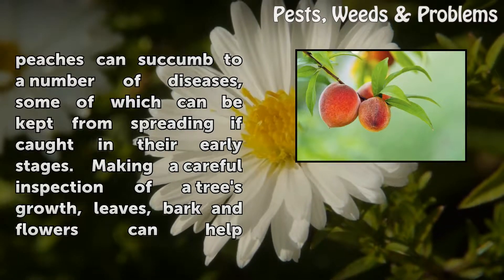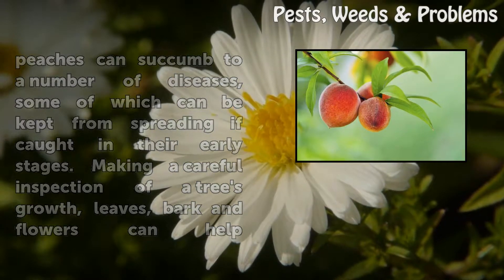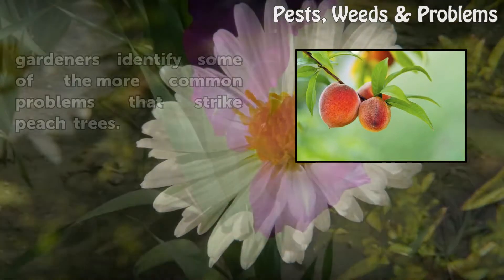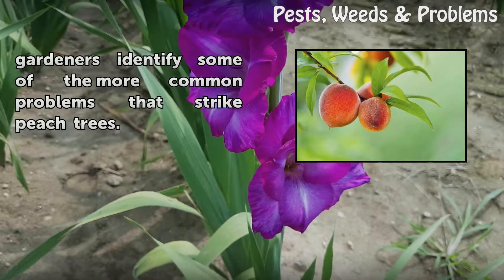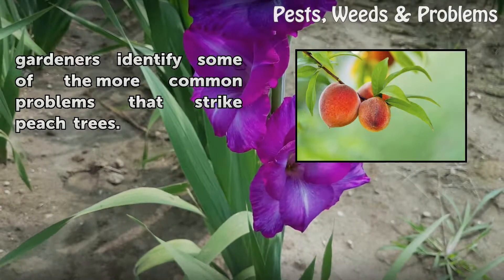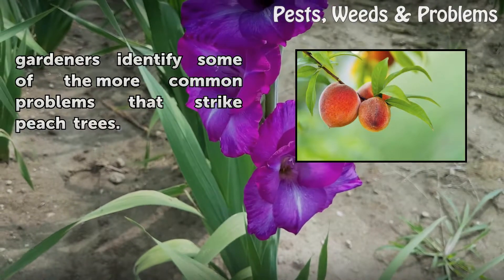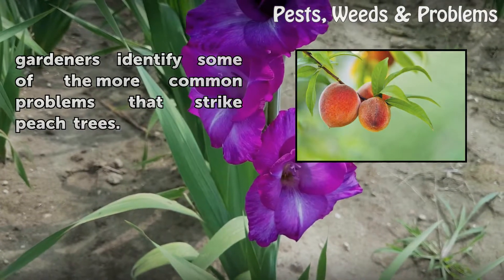Making a careful inspection of a tree's growth, leaves, bark, and flowers can help gardeners identify some of the more common problems that strike peach trees.